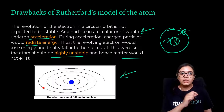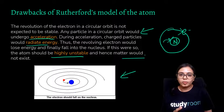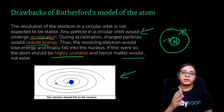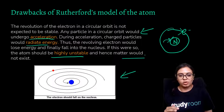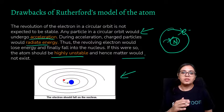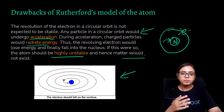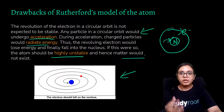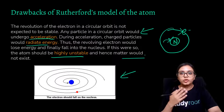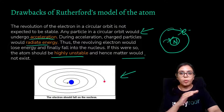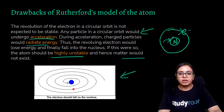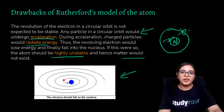If an electron had to keep revolving, it would keep losing energy and there would come a point, as shown in the animation, when it would stop revolving and ultimately collapse — coming close to the nuclear state and falling in. If that were to happen, the atom would be highly unstable because there must be some distance between the positive and negative charges. If they collapsed together, matter as we know it would simply cease to exist. This is the fundamental drawback of Rutherford's model, and therefore some other model must be proposed — which we will find out in the next part of the chapter.